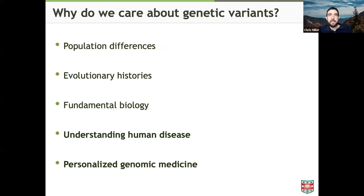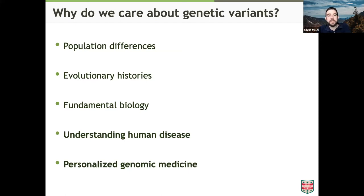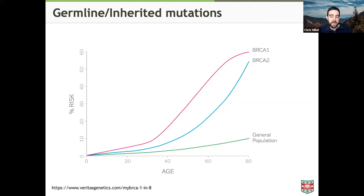There are several types of variants to consider. Sally already talked about germline or inherited mutations that can affect predisposition or cancer risk. BRCA1 and BRCA2 are the most famous examples — if you have them, you have a very high likelihood of having breast cancer by the time you hit 60 or so. It's what leads people like Angelina Jolie to get a double mastectomy after testing positive for mutations in the BRCA genes.